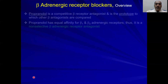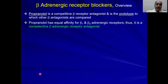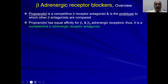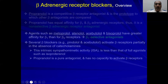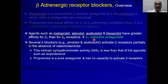Now we switch to beta blockers. The prototype is propranolol — remember, the suffix '-lol' distinguishes these drugs. Any new beta blocker discovered is compared with propranolol. It is a non-selective beta blocker that inhibits both beta-1 and beta-2. There are beta-1-selective agents including metoprolol, atenolol, acebutolol, and bisoprolol.